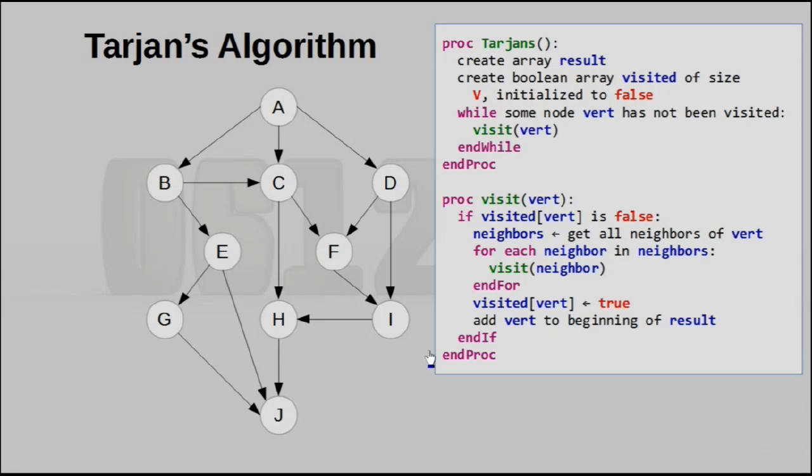So well, this is the code of Tarjan's Algorithm. As we've mentioned, this is essentially just depth-first search. In fact, this is the recursive formulation of depth-first search, and you can see that from this visit procedure right here, at some points it actually calls itself.